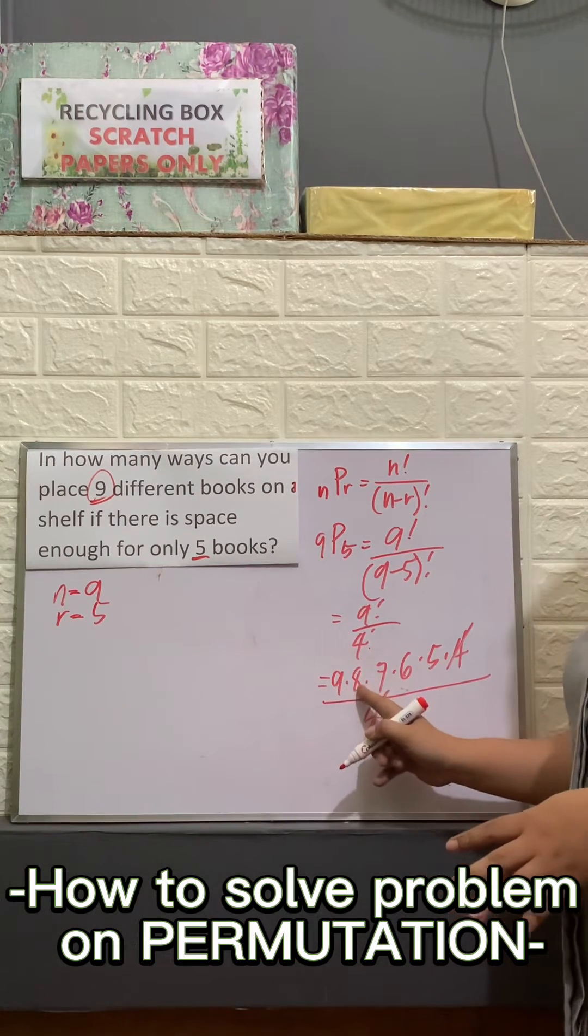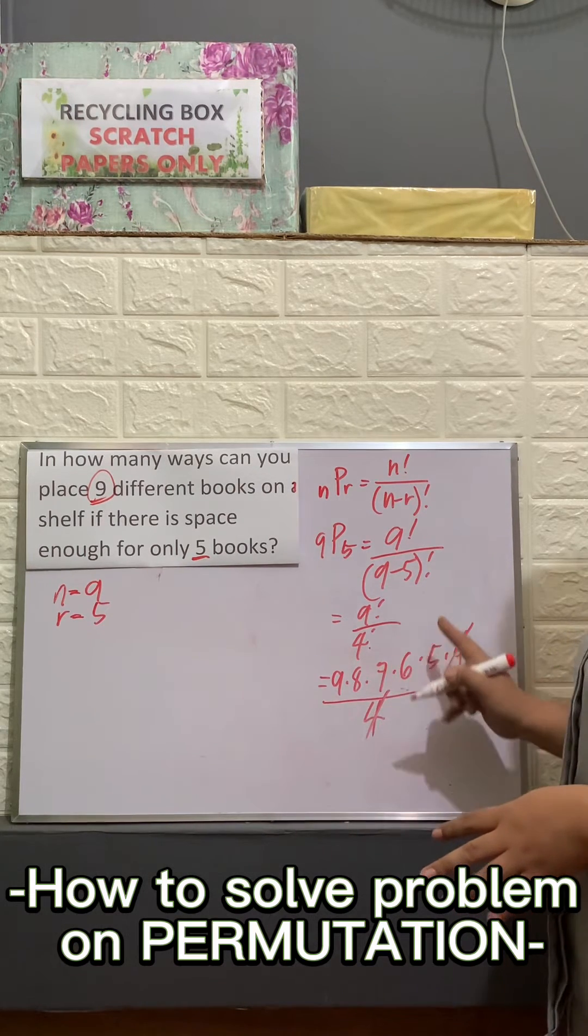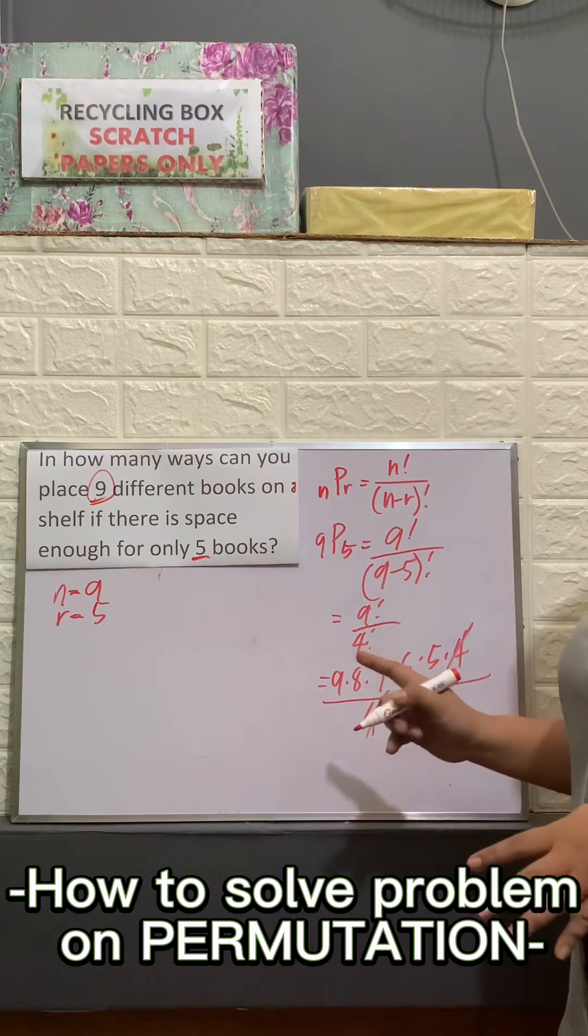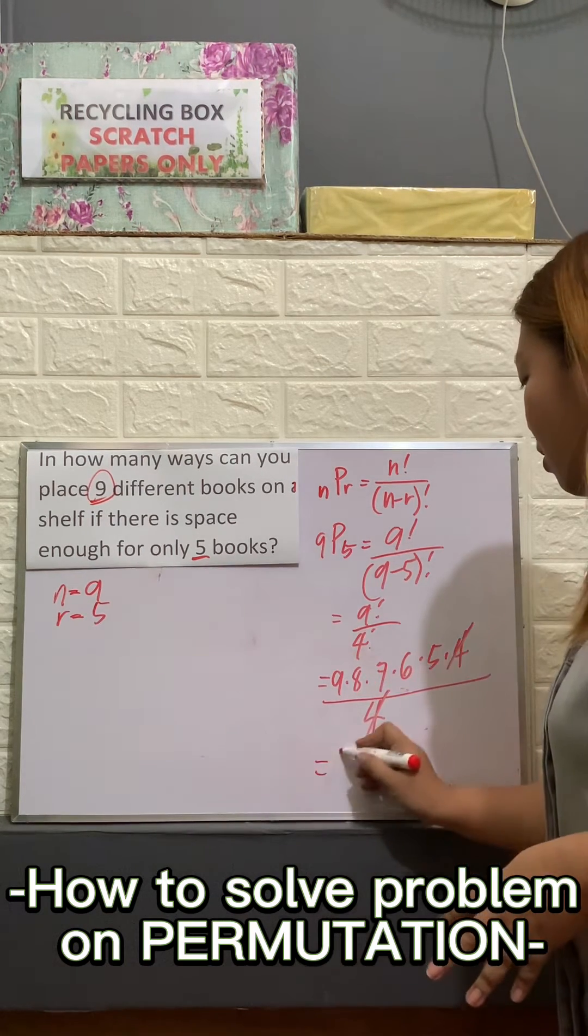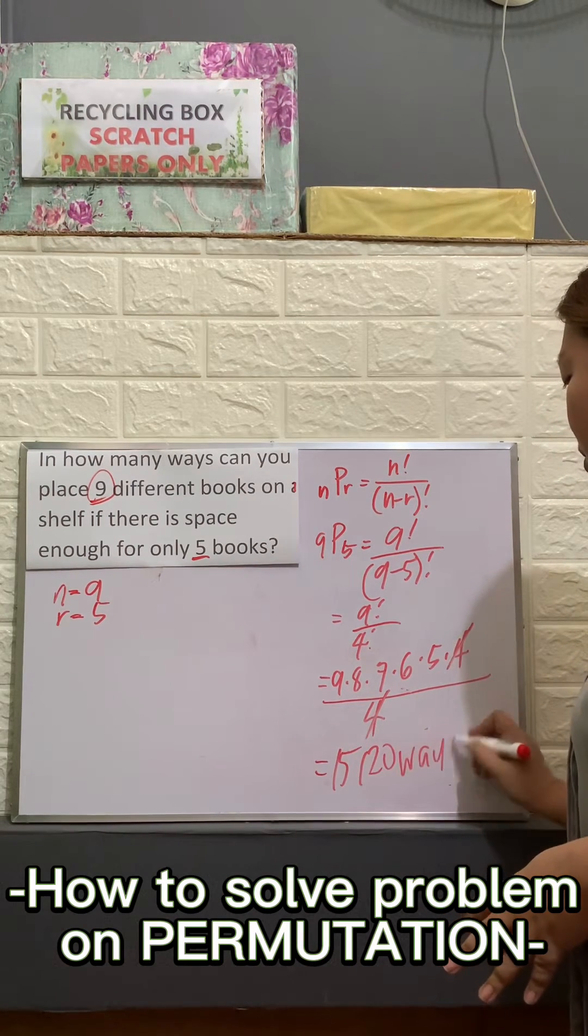We have here 9 times 8 is 72 times 7 is 504 times 6 which is 3,024 and times 5 that's 15,120 ways.